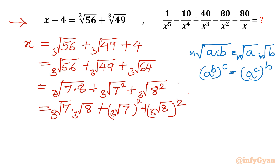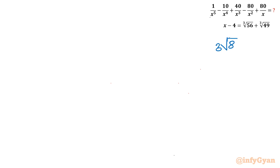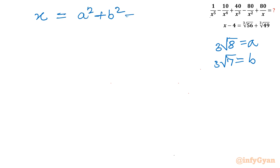Let us consider cube root of 8 as 'a' and cube root of 7 as 'b'. So x is written as a times b plus b square plus a square. Our substitution is: cube root of 8 equals a, and cube root of 7 equals b. So x is equal to a square plus b square plus ab.